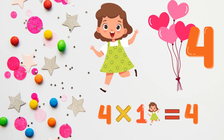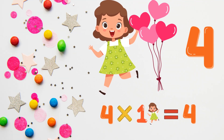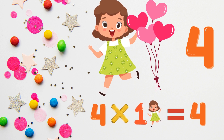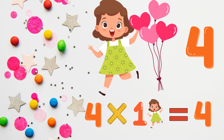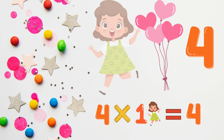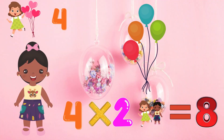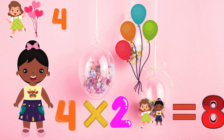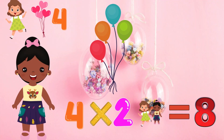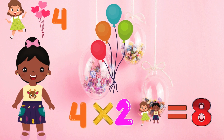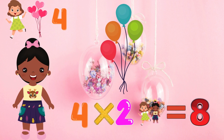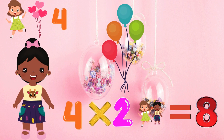Isha used 4 balloons to create a bouquet for one of her friends. So 4 multiplied by 1 equals 4. She used 4 more balloons to make a bouquet for her second friend. That makes a total of 8. So 4 multiplied by 2 equals 8.